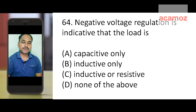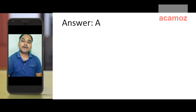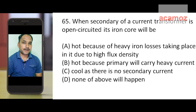Next question: negative voltage regulation is indicative that the load is — option A: capacitive only, option B: inductive only, option C: inductive or capacitive, option D: none of the above. Whenever the voltage regulation is negative, the answer is option A: capacitive load.